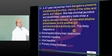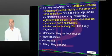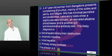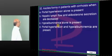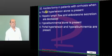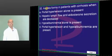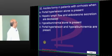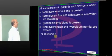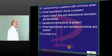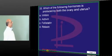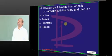A 47-year-old with pruritus and antimitochondrial antibody — the answer is primary biliary cirrhosis. Another important question: portal hypertension plus hypersplenism. Relaxin is a hormone produced by both the ovary and uterus.